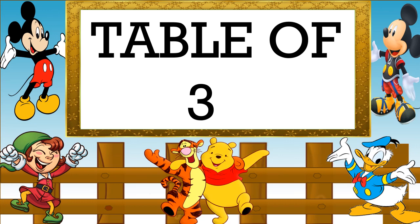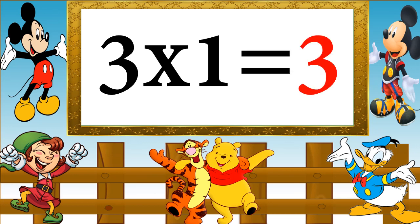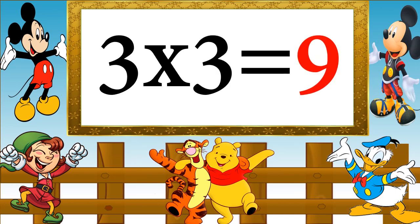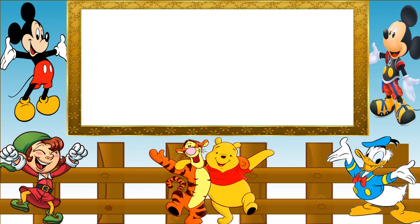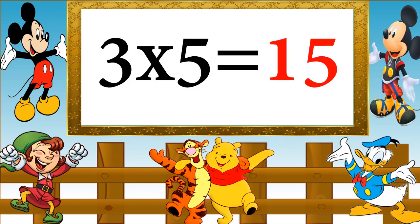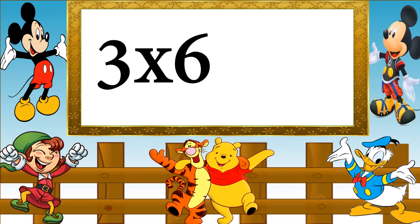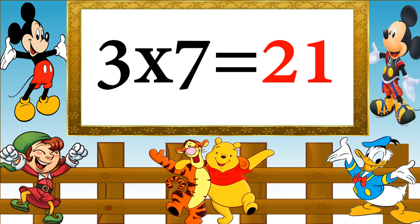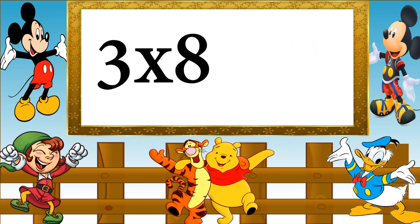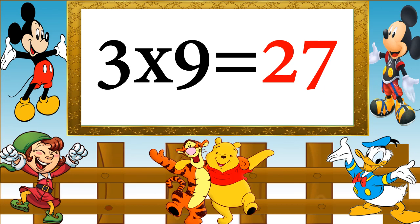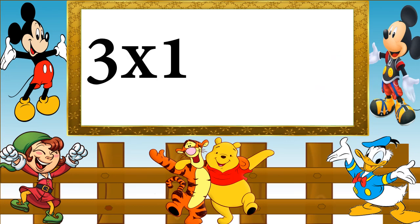Table of 3. 3 ones are 3, 3 twos are 6, 3 threes are 9, 3 fours are 12, 3 fives are 15, 3 sixes are 18, 3 sevens are 21, 3 eights are 24, 3 nines are 27, 3 tens are 30.